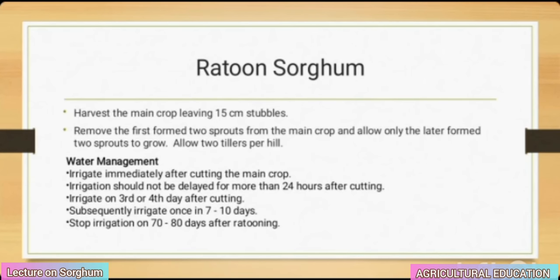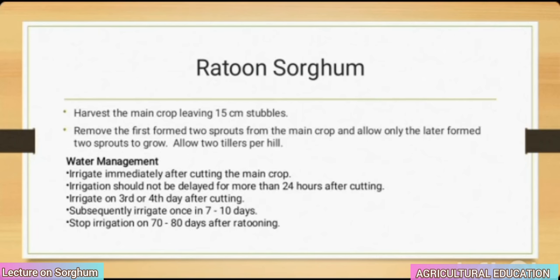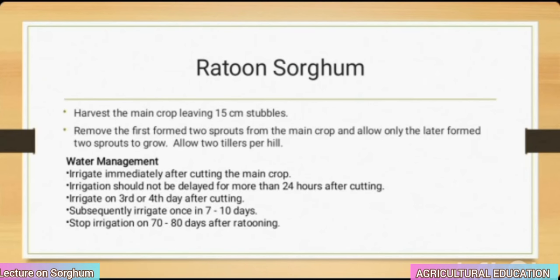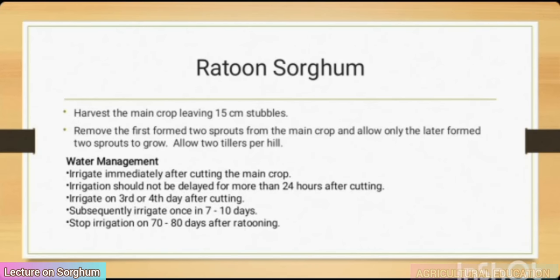Ratoon management: harvest the main crop leaving 15 cm stubbles. Remove the first-formed 2 sprouts from the main crop and allow only the later-formed 2 sprouts to grow; allow 2 tillers per hill. Water management: irrigate immediately after cutting the main crop — irrigation should not be delayed more than 24 hours after cutting. Irrigate on the 3rd or 4th day after cutting, then subsequently irrigate once in 7–10 days. Stop irrigation 70–80 days after ratooning.